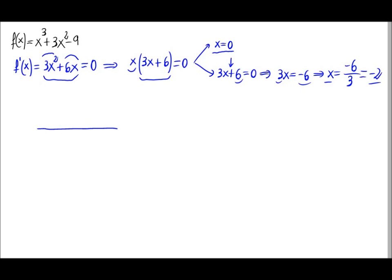With this we are going to determine where the function increases or decreases. Let's represent these values on a number line: here we have -2, and here 0. The derivative is 3x² + 6x. We can see we have 3 intervals: values smaller than -2, values between -2 and 0, and values bigger than 0.